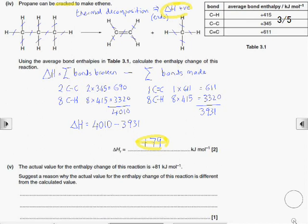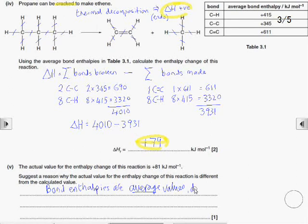OK, now why the enthalpy change might be different from a calculated value. It's an important idea. The bond enthalpies are only average values obtained using lots of different molecules, and so we're working here with values that aren't specific to the molecules that we've got in our bond enthalpy calculation.